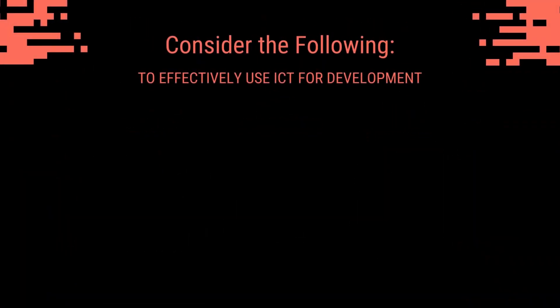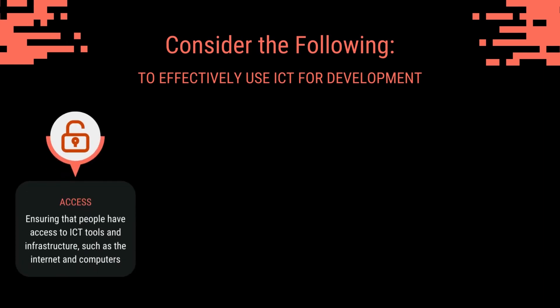To effectively use ICT to achieve development, it is important to consider the following. Access: ensuring that people have access to ICT tools and infrastructure, such as the internet and computers, is essential for enabling the use of ICT for development.